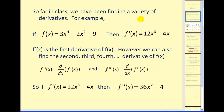So far in class we've been finding a variety of derivatives. For example, if we have the function f(x) = 3x⁴ − 2x² − 9, we can apply the power rule to obtain the derivative equal to 12x³ − 4x. f′(x) is the first derivative; however, we can find the second, third, and fourth derivatives as well. If we take the derivative of the derivative we obtain the second derivative, and so on. For example, if we want to find the second derivative we find the derivative of the derivative, which gives us 36x² − 4, again using the power rule.